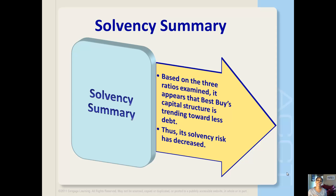Best Buy's times interest earned was also much higher than HH Gregg's. Summarizing the solvency ratios for Best Buy, based on the three ratios that we looked at, it does appear that Best Buy's capital structure is trending toward less debt, making them less risky. So their solvency risk has decreased.